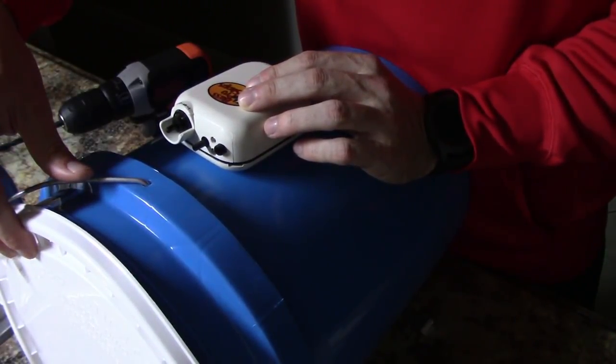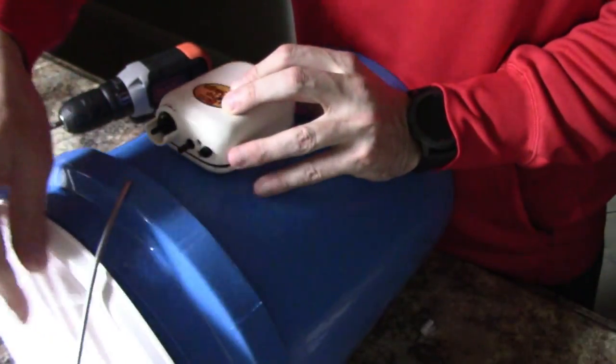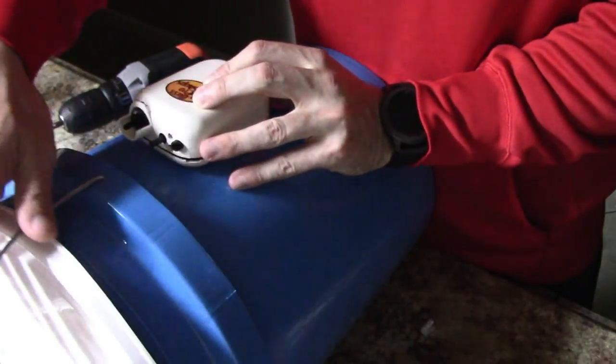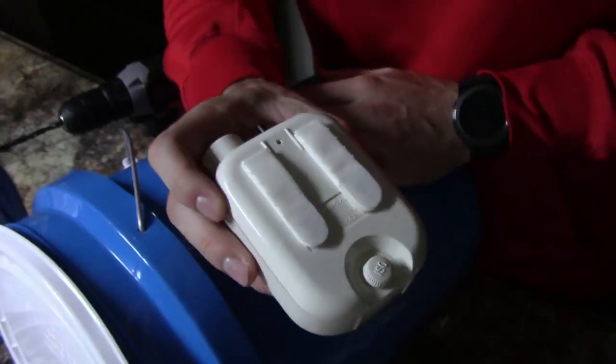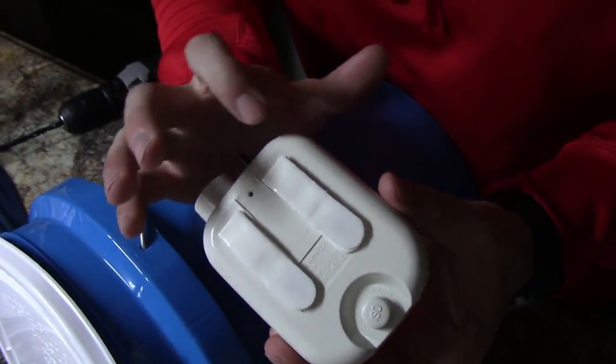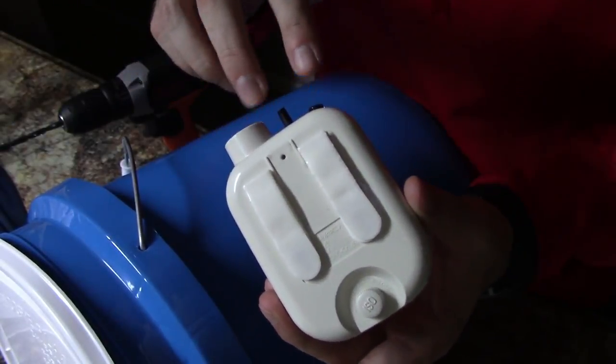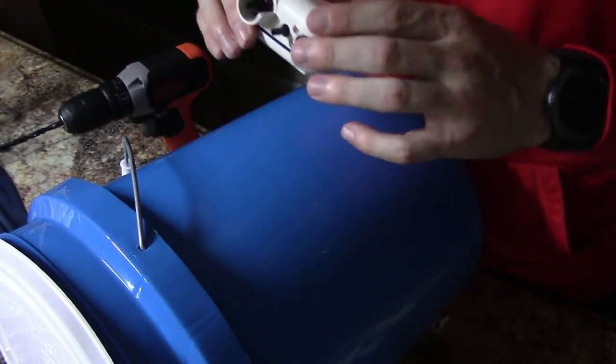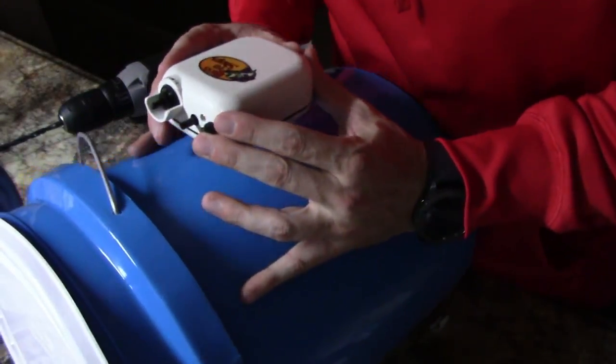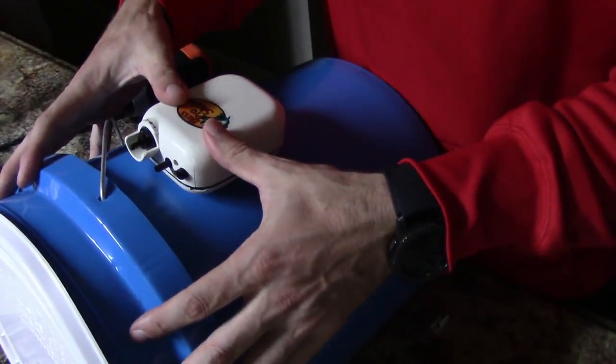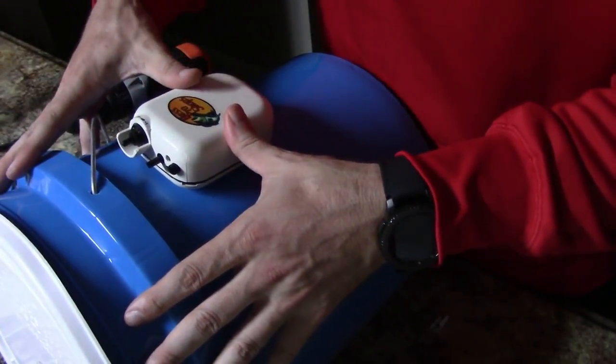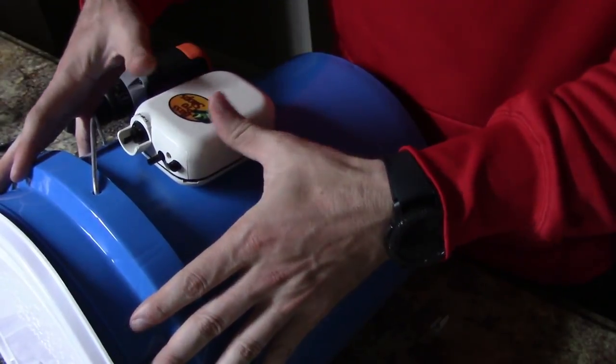So I'm going to put mine right here where the handle can't hit it. Got a nice clearance on either side of it. Another little trick is I went ahead and stuck the ones that are going to be mounted to my bucket. I velcroed them in. So now they'll fit perfectly whenever I put this on here. Just like that.